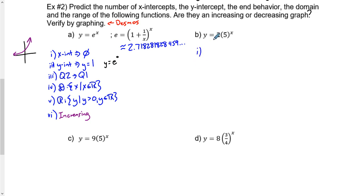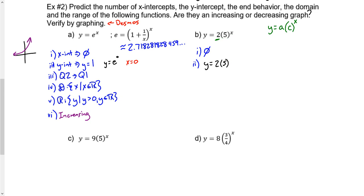So if we go to this next question, you'll see there's one thing different — there's a number in front of our base. Traditionally we'll call it a, so we have a multiplied by c to the power of x. A lot of our things don't change: x-intercepts — it's still an exponential, so there are no x-intercepts. But our y-intercept does change, because it happens when x equals 0. If we plug 0 in for x, 5 to the power of 0 is 1 following order of operations, so our y-intercept would actually become 2.